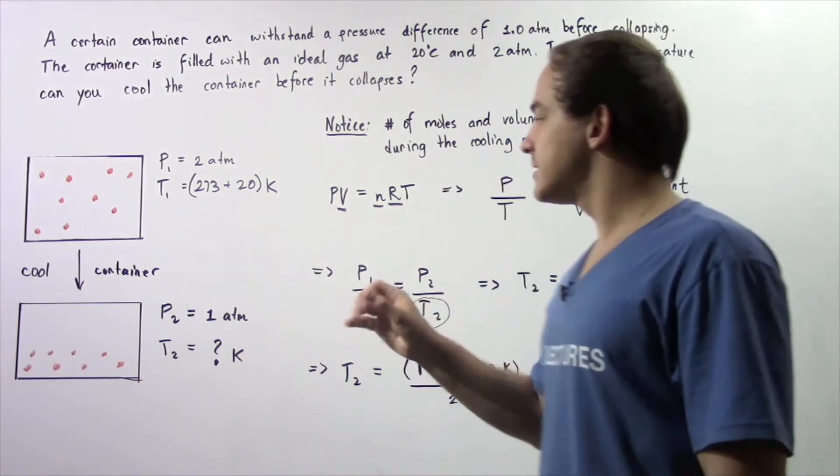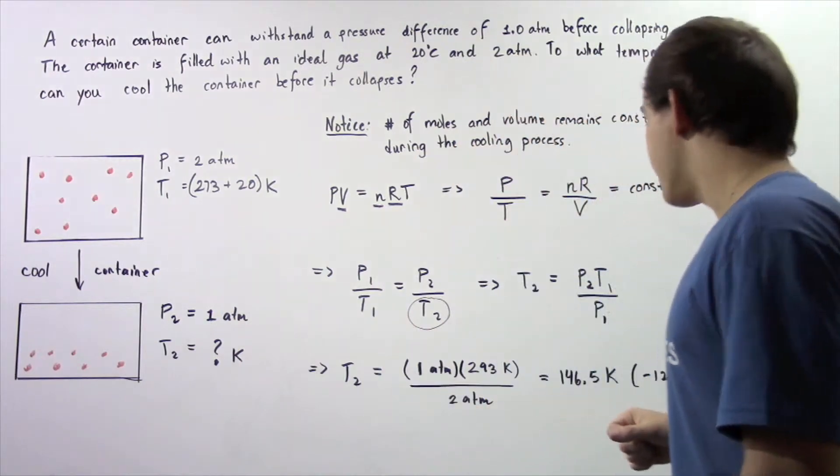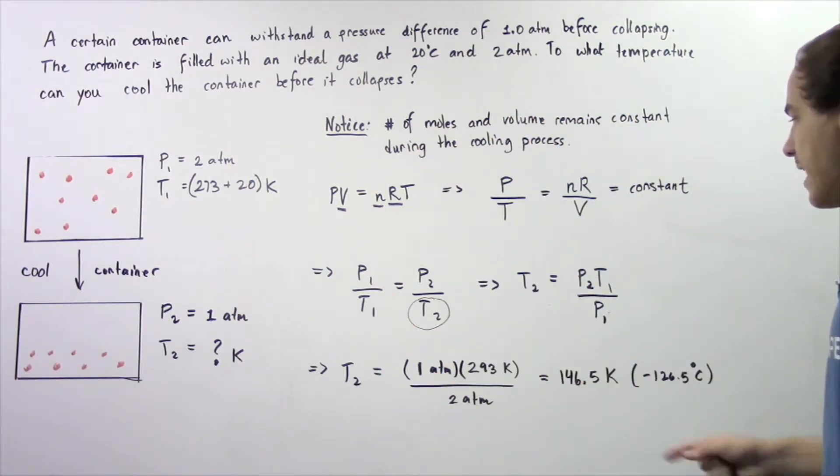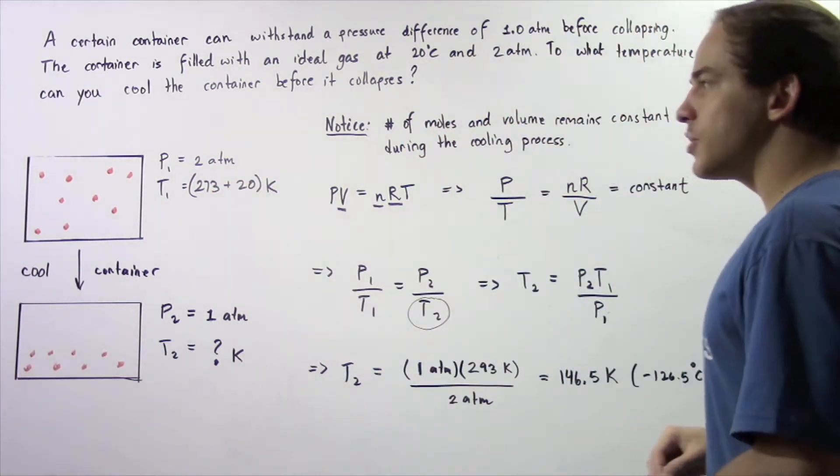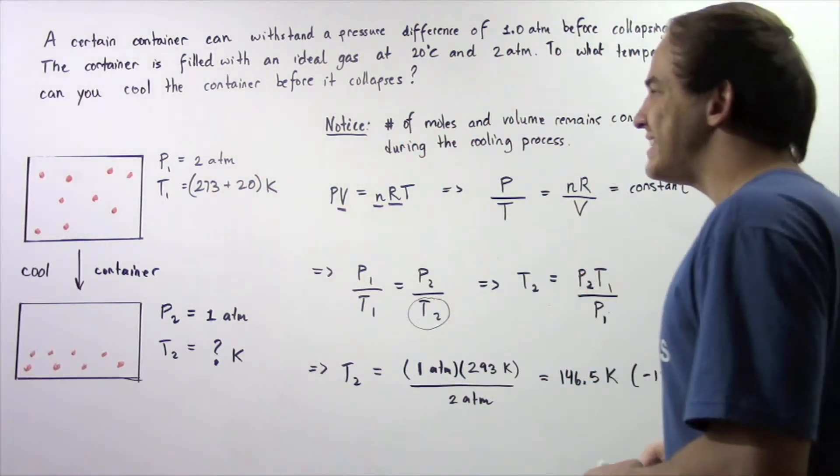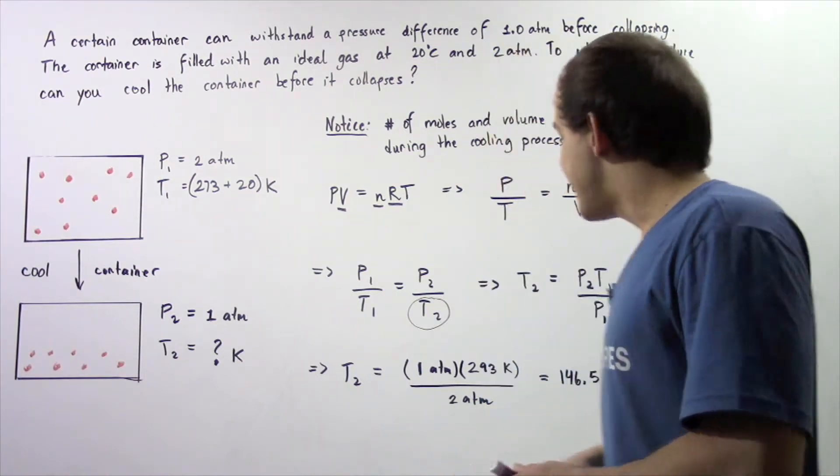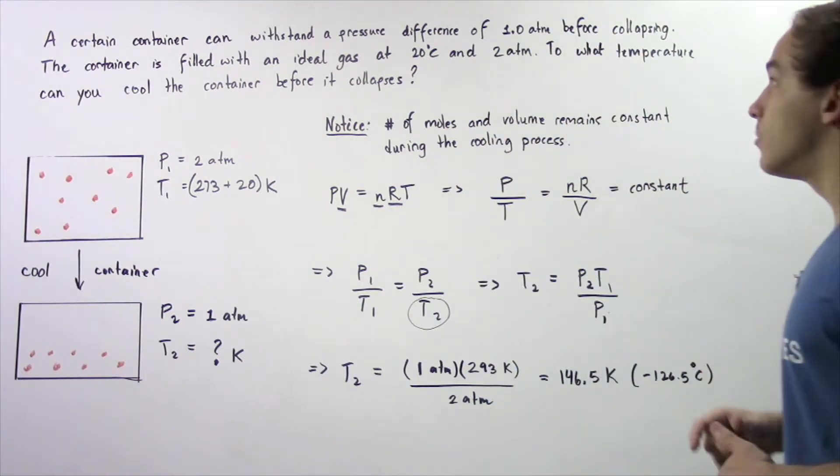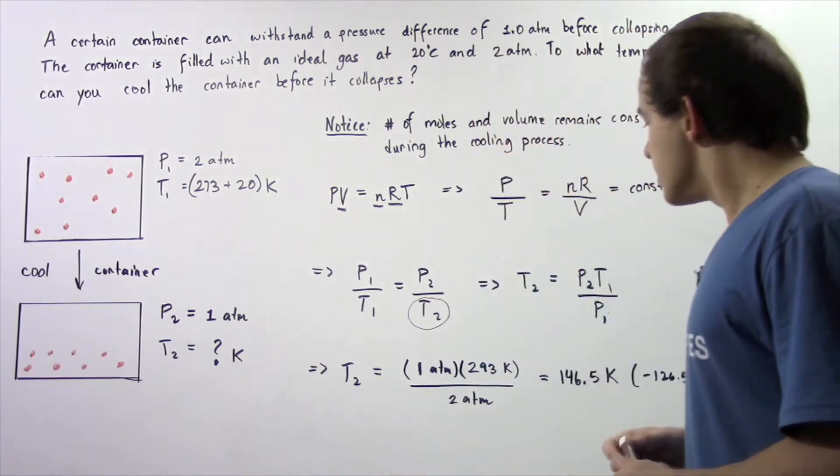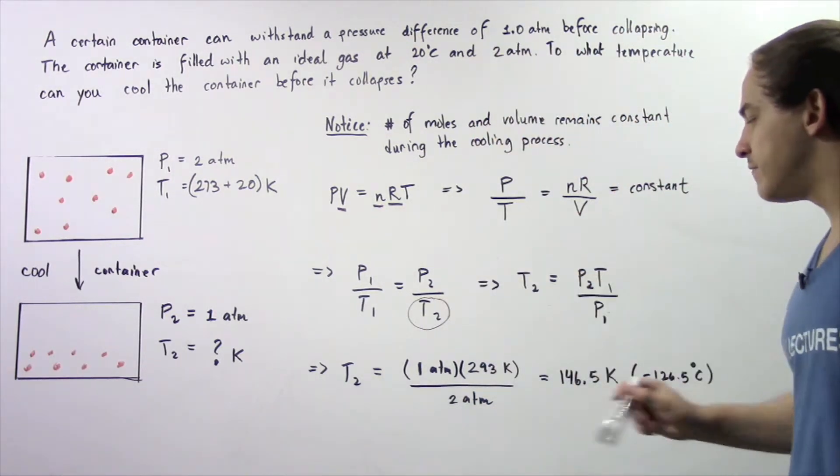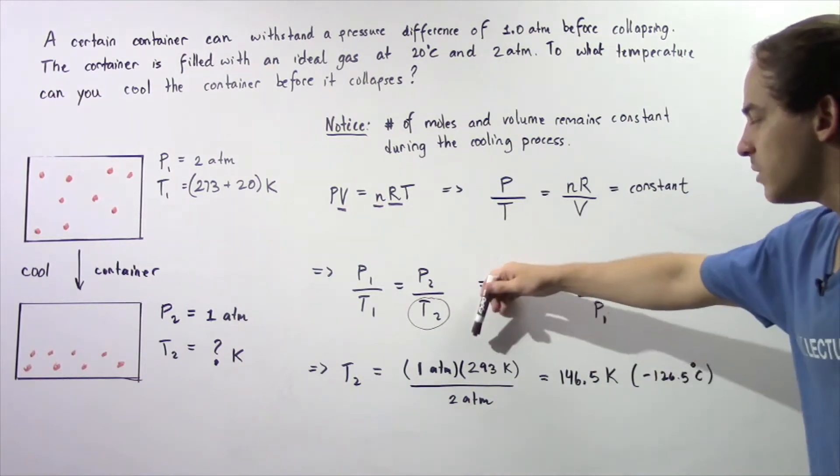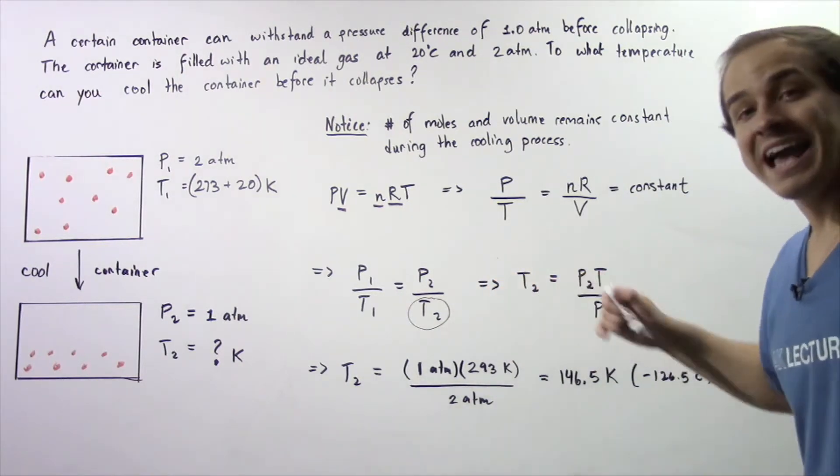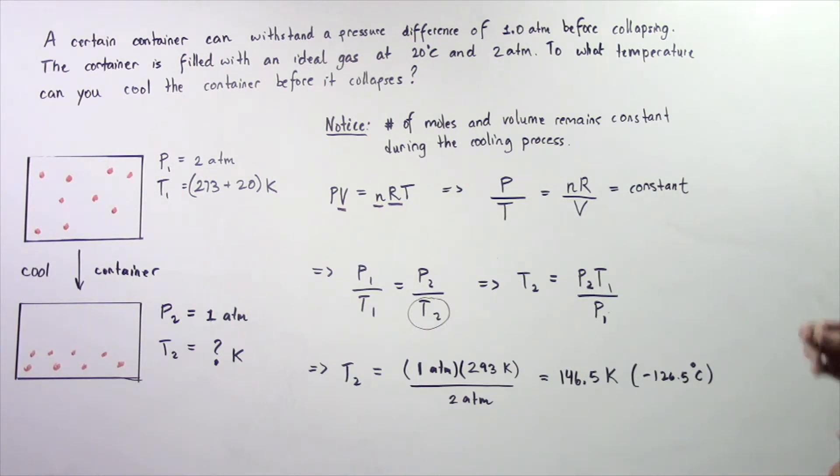Pressure of system 2 is 1 atm. The temperature of system 1 in kelvins is 273 plus 20, so 293 kelvin. Our pressure of system 1 is given to be 2 atm. So we have 1 atm divided by 2 atm, which is simply 0.5 multiplied by 293 kelvin. And that gives us 146.5 kelvin.